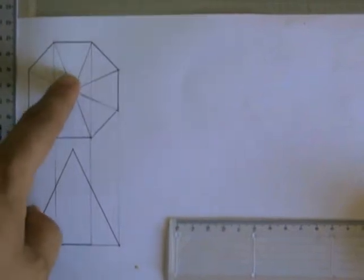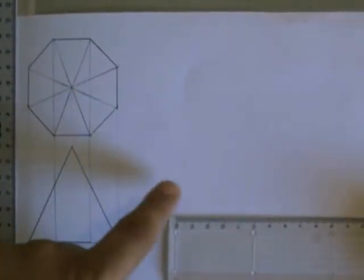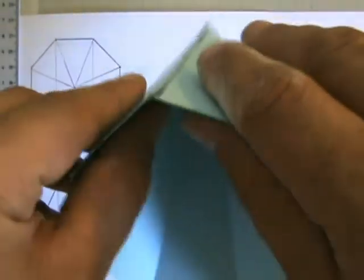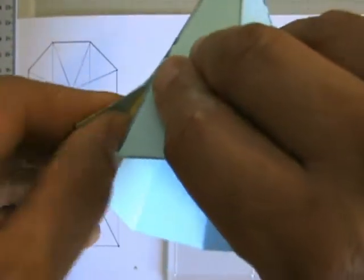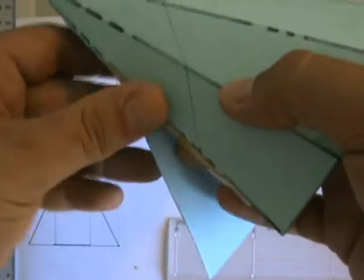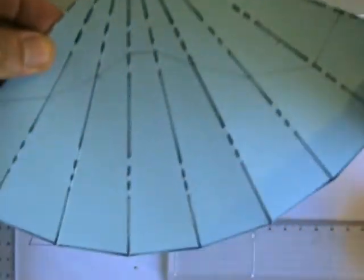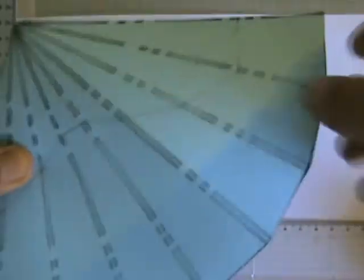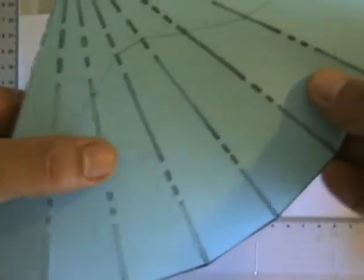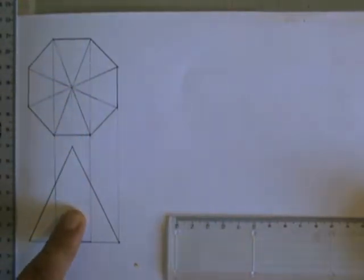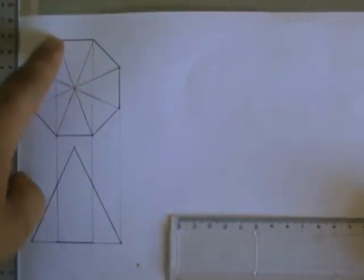I'm going to include a side as well. As you can see, the development of a pyramid, unlike that of a prism, is in the form of a sector - a sector with straight edges at the wall. So eight similar triangles attached to each other since it's an octagon.